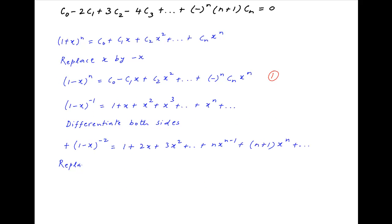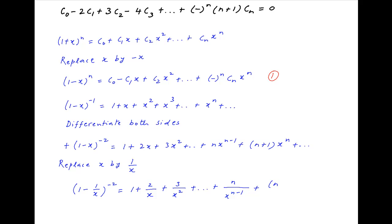Now replace x with 1/x in this expression. We get (1 - 1/x)^(-2) = 1 + 2/x + 3/x^2 + ... + n/x^(n-1) + (n+1)/x^n + and so on. Let's call this result 2.